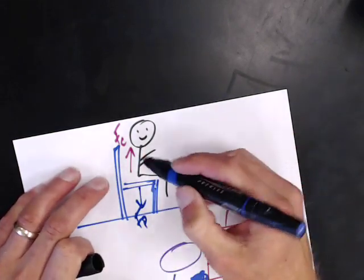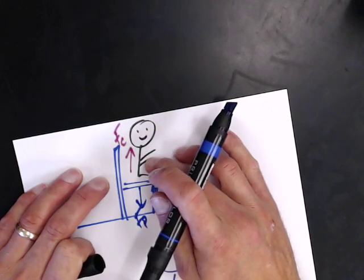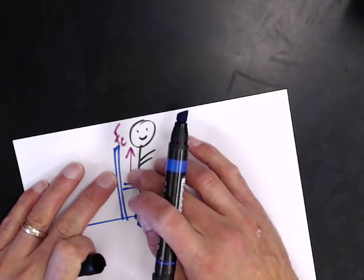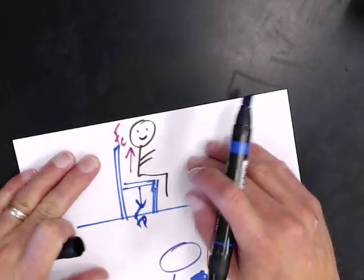We also know that gravity's acting here, but that's acting on the same person as the chair. So even though they may have the same magnitude and opposite direction, that doesn't mean they're Newton's third law pairs.